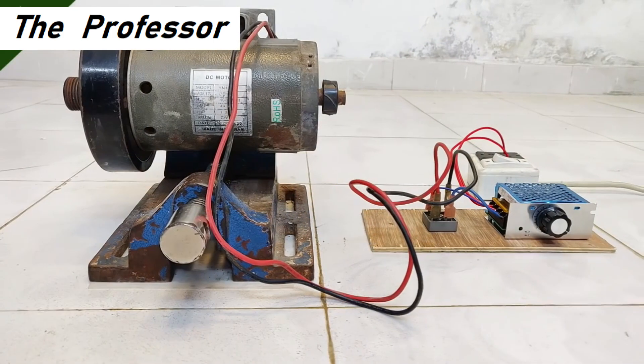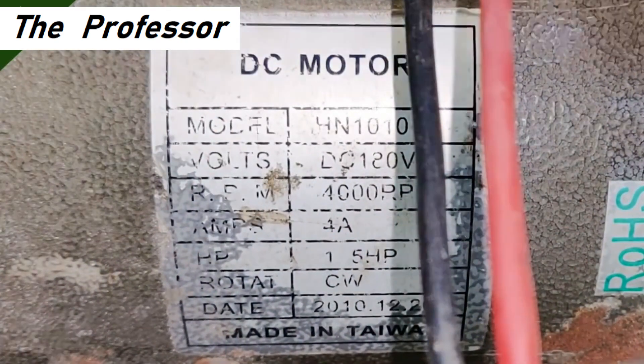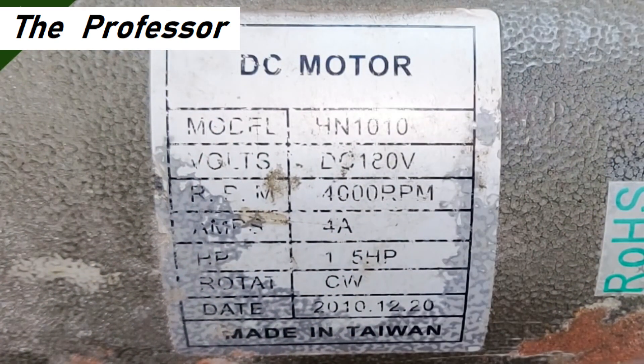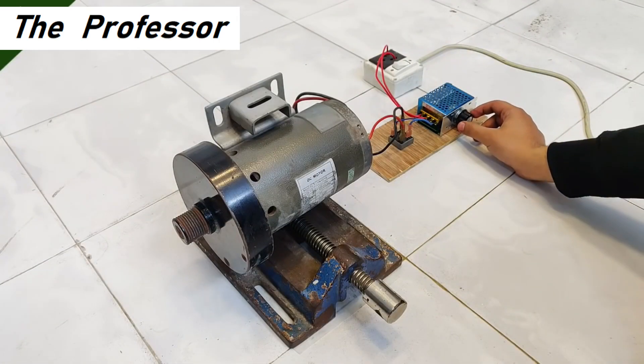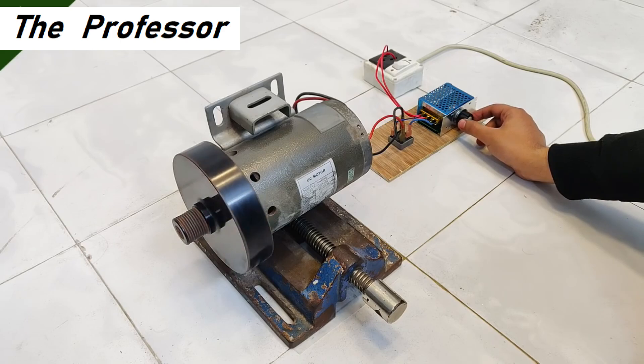This is a pretty big DC motor with a big flywheel attached and it has 180 volts 4000 rpm with an input current of up to 4 amperes. I'm going to run this with the controller.